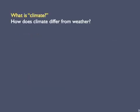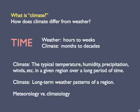What is climate? The meanings of climate and weather are related, but they differ in a fundamental way. It comes down to a four-letter word: time. Weather applies to time periods of hours to a week or a few weeks. Climate applies to time periods of several months to several decades.